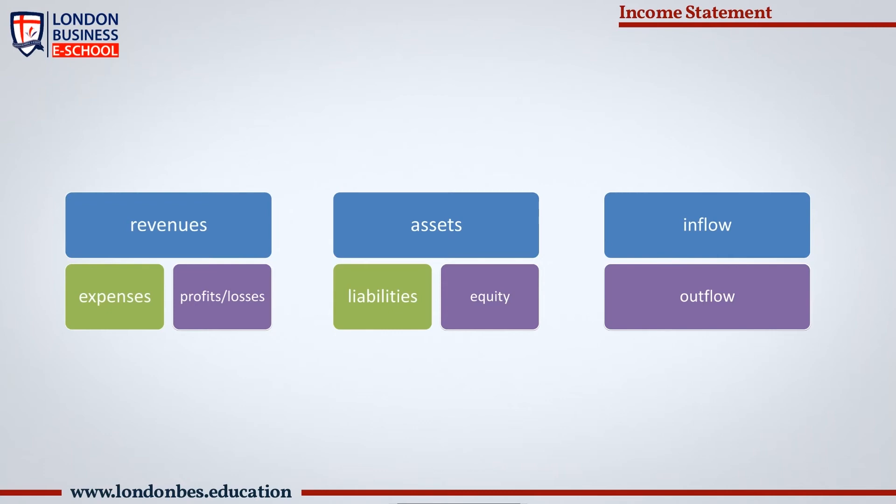Comprehensive Income: comprehensive income includes net income and unrealized income, such as unrealized gains or losses on hedged derivative financial instruments and foreign currency transaction gains or losses. It provides a holistic view of a company's income not fully captured on the income statement.